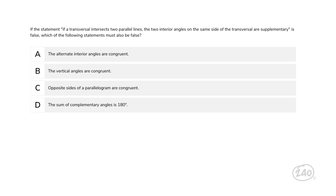If the following statement is false — if a transversal intersects two parallel lines, the two interior angles on the same side of the transversal are supplementary — which of the following statements must also be false? Helpful hint: if the two interior angles are not supplementary, the alternate interior angles will not be congruent. That means there's only one answer: A.